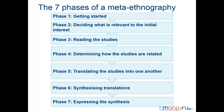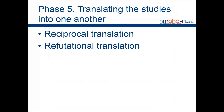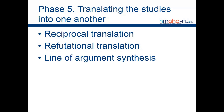Meta-ethnography has seven stages: getting started, deciding what's relevant, reading the studies, determining how the studies are related, translating the studies into one another, synthesizing the translations — where you start transforming the data — and expressing the synthesis. You start with reciprocal translation, looking at concepts in the primary studies to see what is similar. You then do refutational translation, looking for evidence that doesn't fit. For primary qualitative researchers you might know that as your disconfirming case.